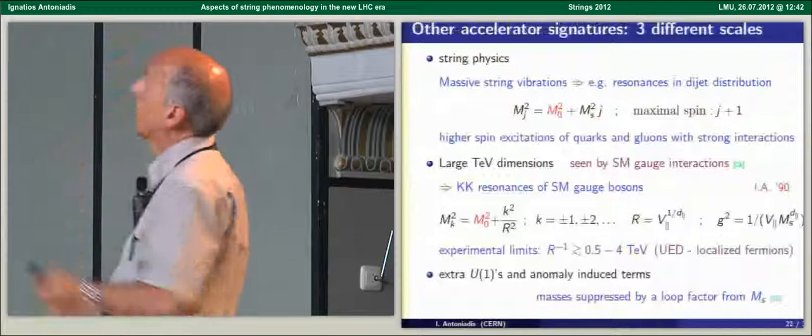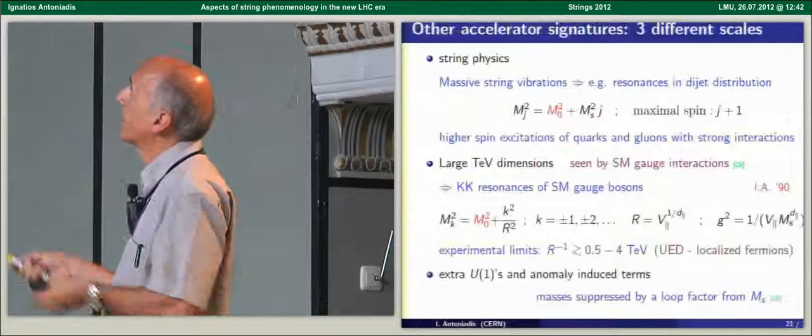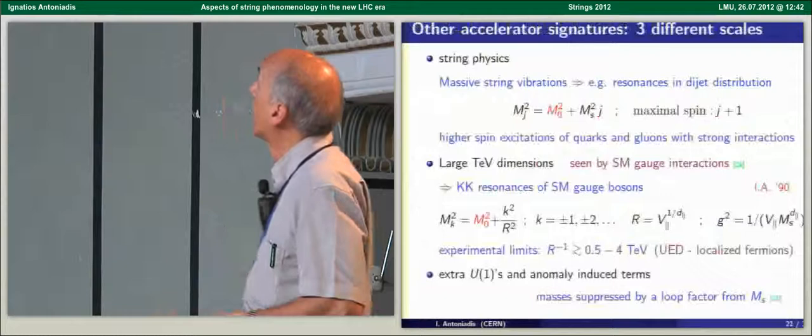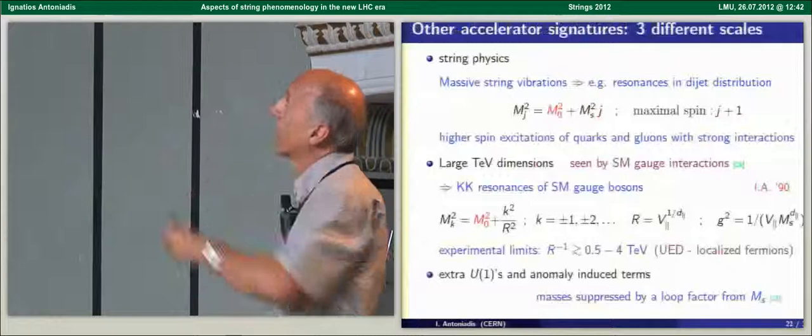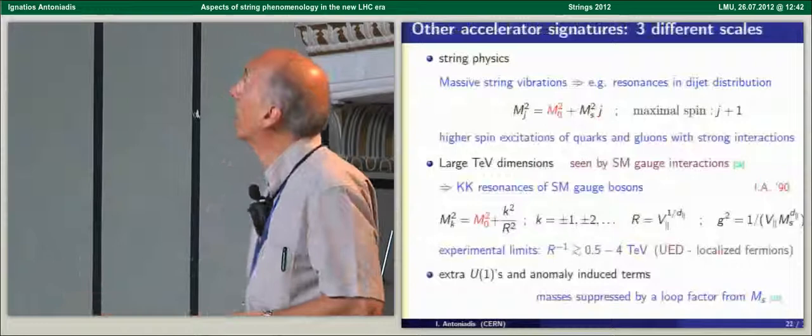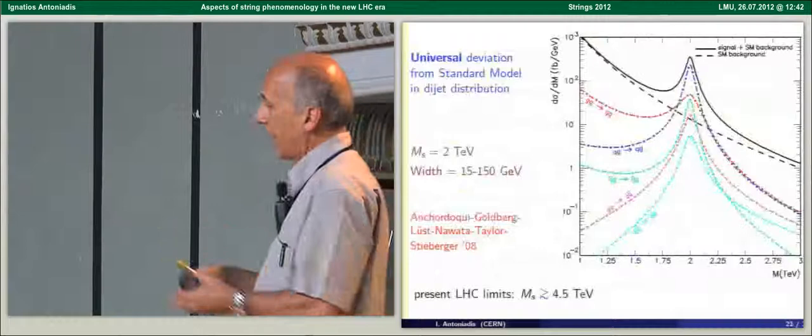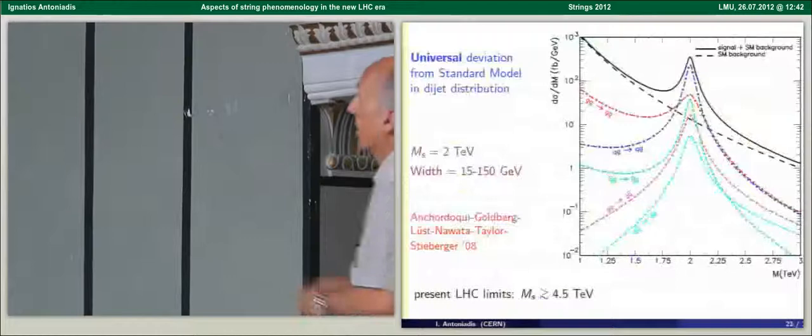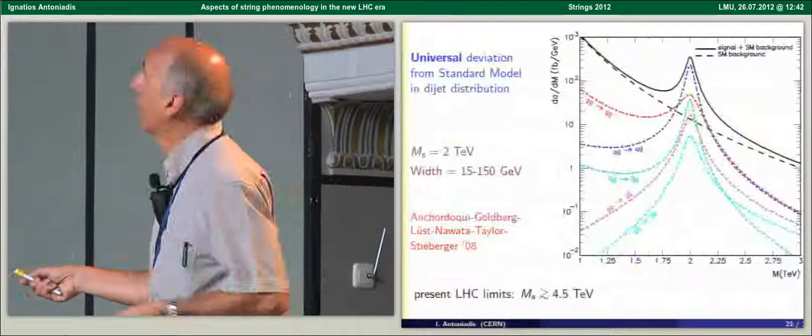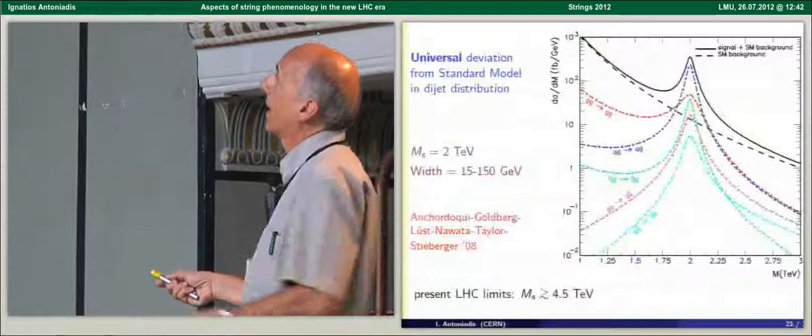And the three other type of signatures that we can imagine is the first one is the obvious one which are the string excitations. There was a group here with Dieter who did a lot of analysis of these excitations. Basically those that are relevant are those which have strong interactions and therefore the excitations of quarks and gluons, so open string excitations. And their main point was that since the string theory is perturbative, the cross-sections are model independent, do not depend on the compactification, does not enter in the tree-level diagrams.